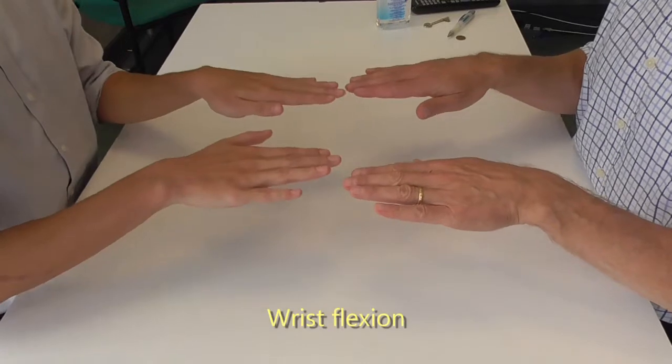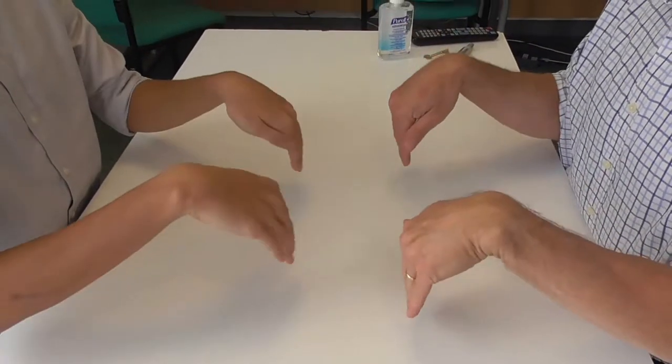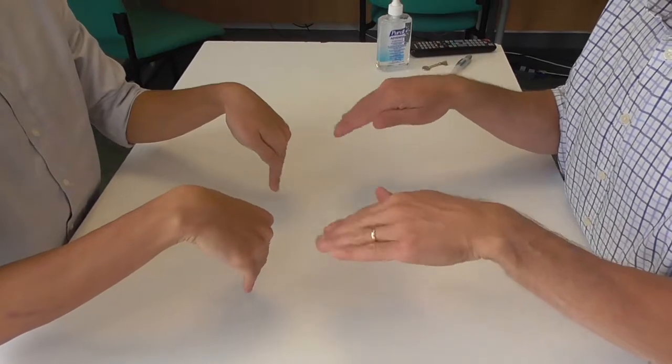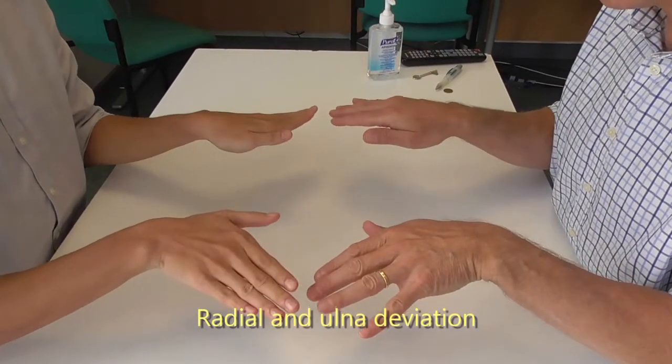So if you can hold your hands up like that for me. I want you to bring your wrists up. That's good. Any pain when you do that? And there seems to be symmetrical movement in that plane. And then if you go from radial deviation to ulnar deviation. That's fine.